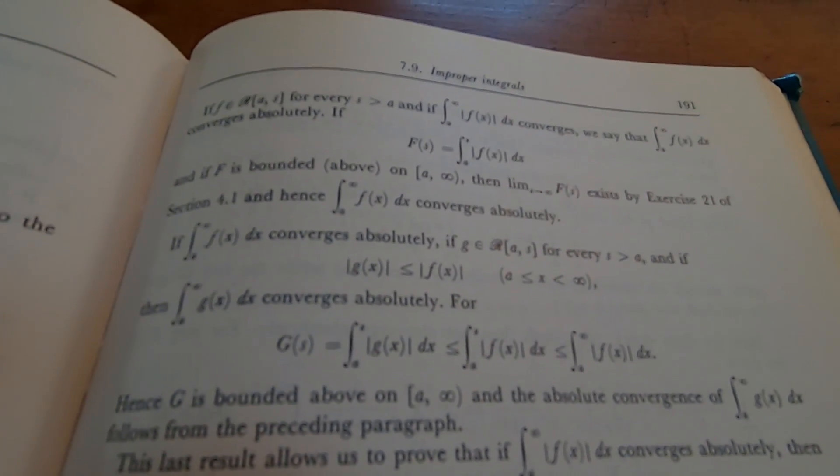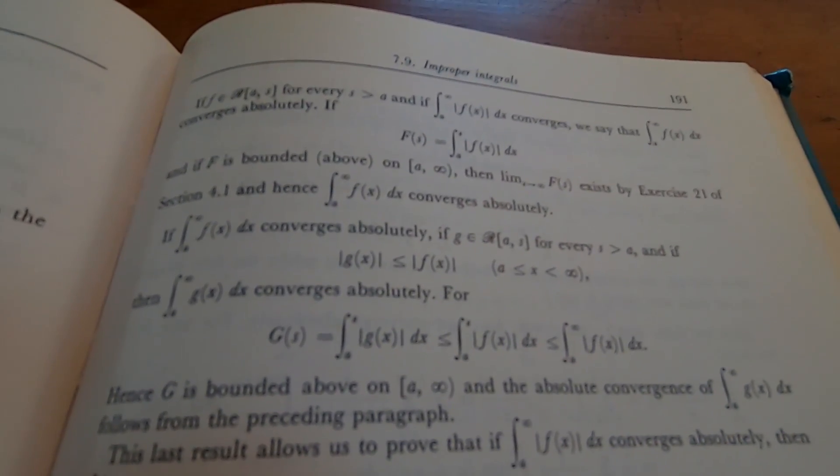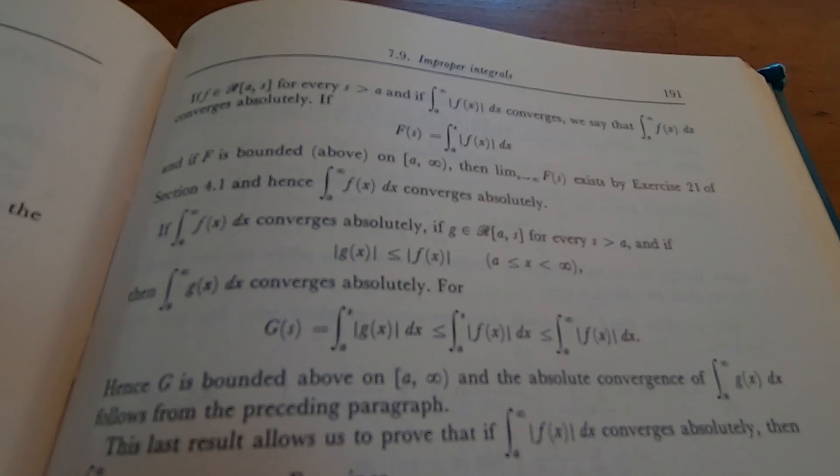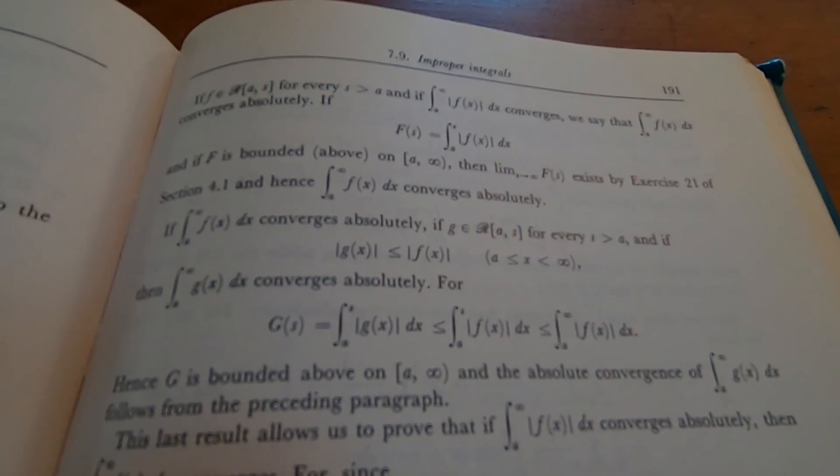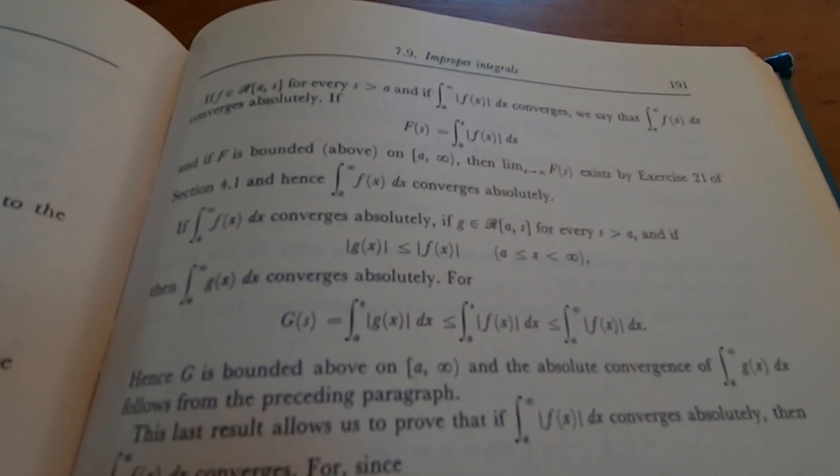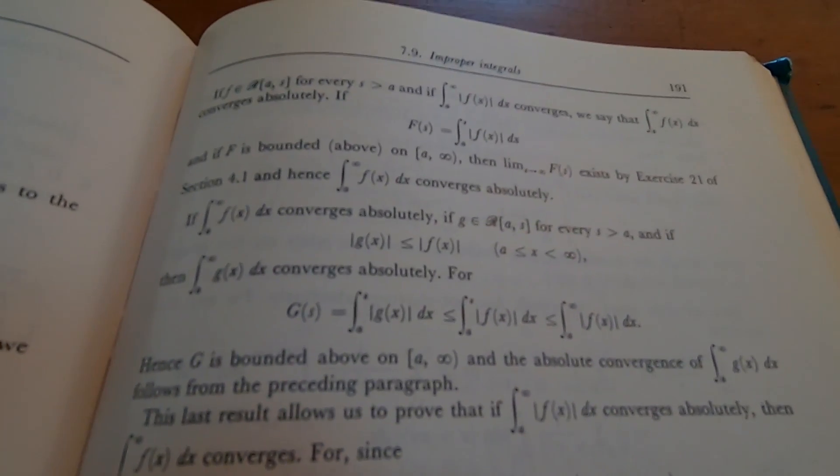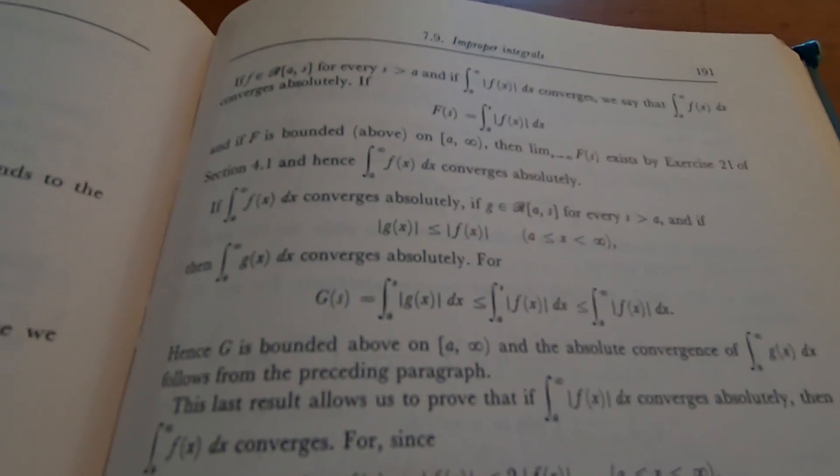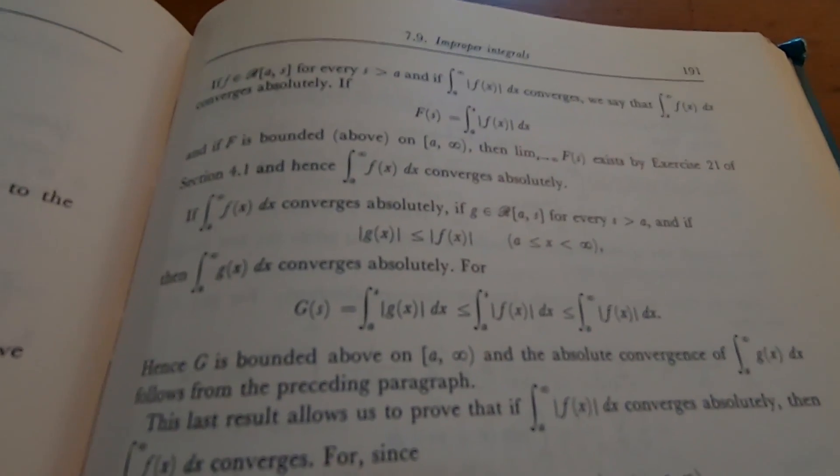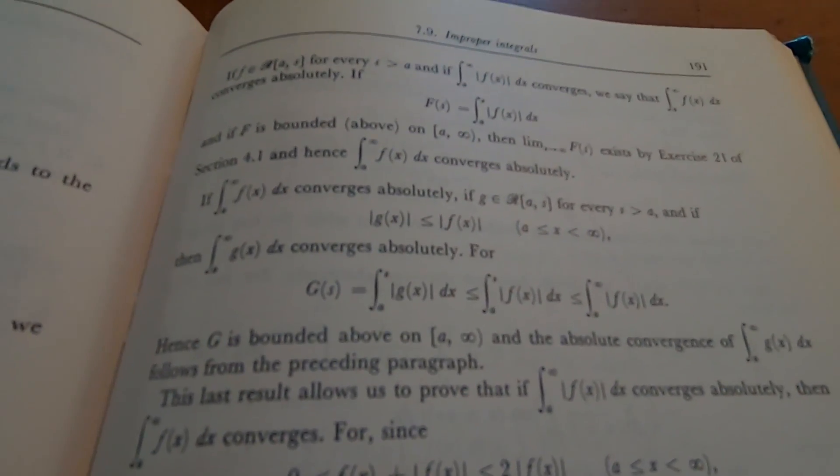And I think that makes it worth it in my mind. It's good to have another resource. Maybe you're struggling with the Weierstrass approximation theorem. You can look that up in this book. Maybe you're having a hard time with measurable sets. You can look that up in this book. It's good to have as many resources as possible.